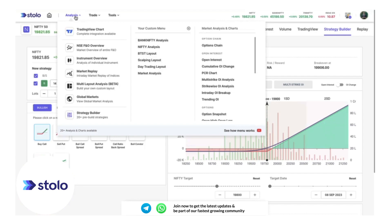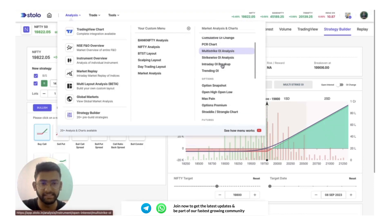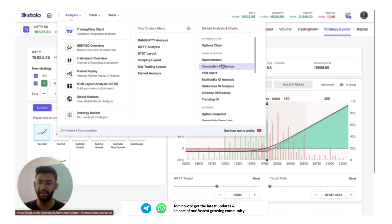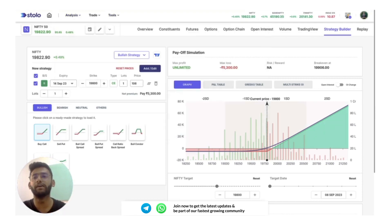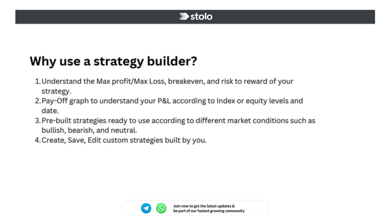Throughout Stolo we have almost 30-plus charts and analysis tools, which you can go through — we have made a lot of videos on them as well. Once you have done your analysis and are ready to take a trade, the strategy builder helps you understand the max profit, max loss you will incur, the break-even price where Nifty levels need to head for you to break even, and the risk-to-reward ratio.